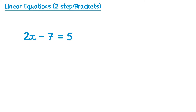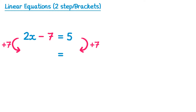Here we have an equation. On the left hand side we have two terms: 2x and then subtract 7, and on the right hand side it's just 5. The first thing we're going to do is deal with this subtract 7 by doing the inverse operation, which is add 7, and we're going to do this to both sides. Adding 7 to the left hand side cancels out the subtract 7, so we're just left with 2x, and on the right hand side 5 plus 7 is 12.